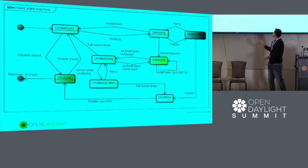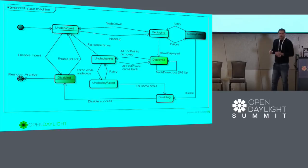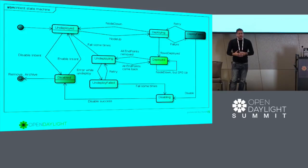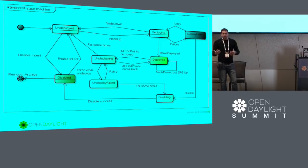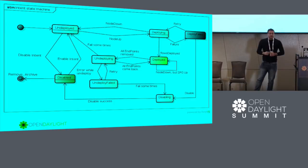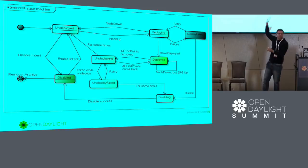When we receive an event such as a switch down, it means it doesn't make sense to have this intent deployed anymore, because we don't have the endpoints or switch there. We should start the process to undeploy this intent and remove all those rules from the switches. Once all those rules are removed from the switch, the intent will go back to the undeployed state. When all those nodes and switches come back again, the entire process to deploy this intent will restart. This is a basic scenario to give you an understanding of how the intent state machine works.